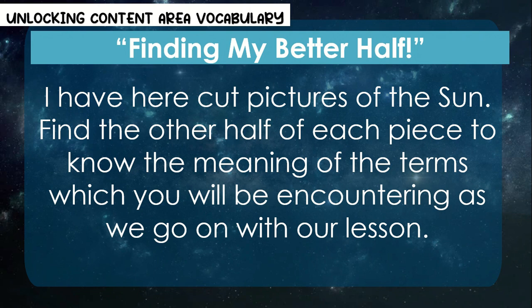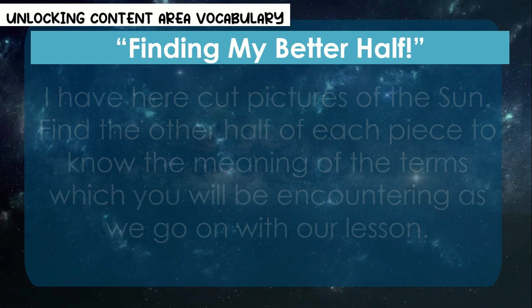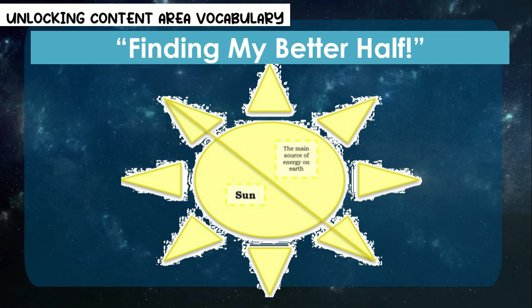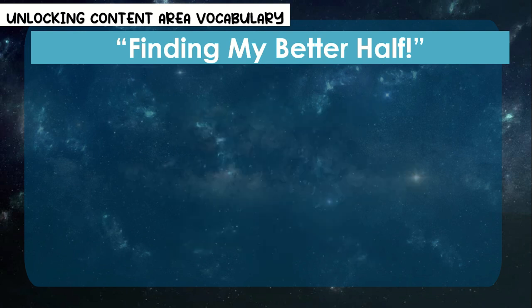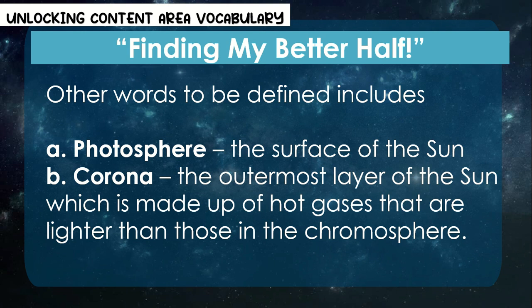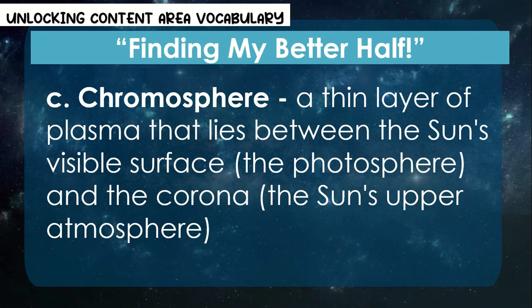For the unlocking of content area vocabulary: 'Finding My Better Half.' I have here cut pictures of the sun. Find the other half of each piece to know the meaning of the terms which you will be encountering as we go on with our lesson. For example: Sun — it is the main source of energy on Earth. Photosphere — the surface of the sun. Corona — the outermost layer of the sun, which is made up of hot gases that are lighter than those in the chromosphere. Chromosphere — a thin layer of plasma that lies between the sun's visible surface, the photosphere, and the corona, the sun's upper atmosphere.